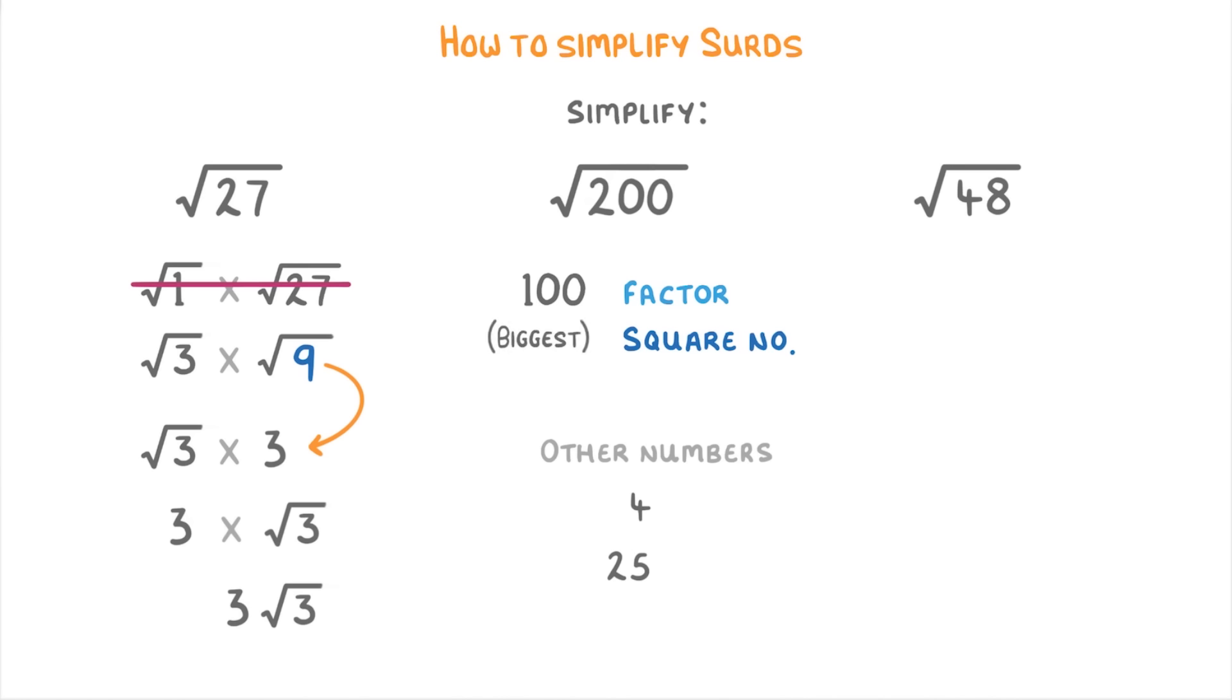You can still get the right answer if you pick a smaller one, but you'll just have to do a few more steps. So if we go for 100, we have to times it by 2 to make 200, so we can rewrite root 200 as root 100 times root 2, which simplifies to 10 root 2 because the square root of 100 is 10.